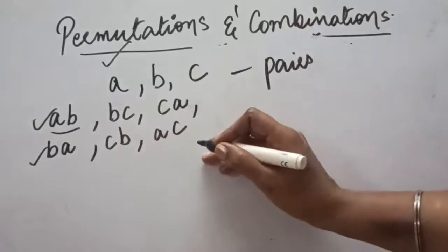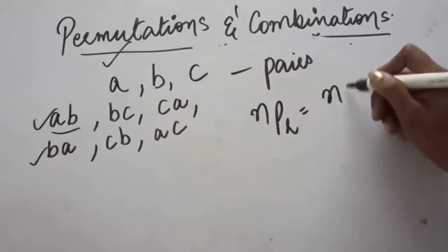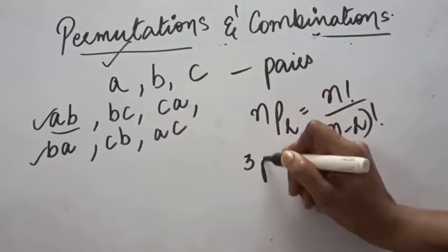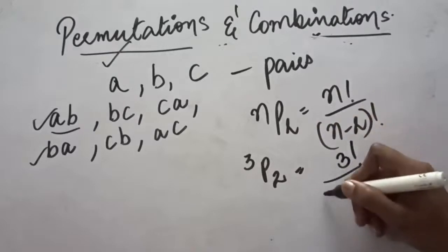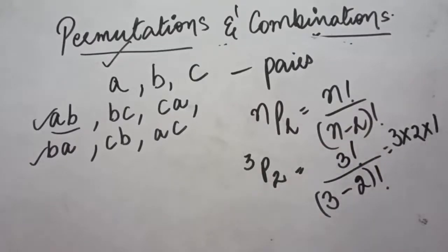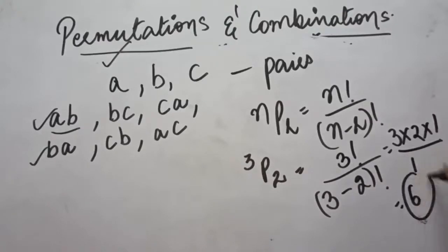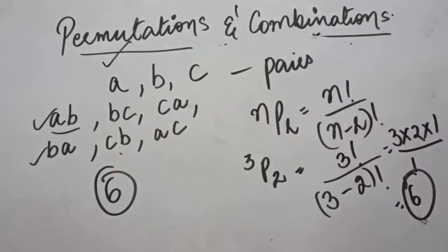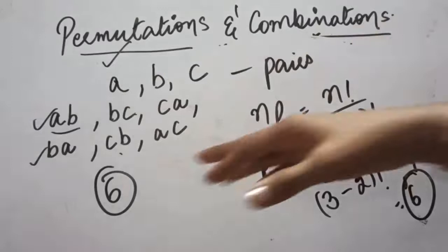Solving this with the permutation formula NPR = N factorial divided by (N minus R) factorial: N is 3 (three letters), R is 2 (pairs of two). So it becomes 3 factorial divided by (3 minus 2) factorial = 3×2×1 divided by 1 factorial = 6 divided by 1 = 6. Counting the pairs gives 6, and the formula also gives 6. This formula is especially helpful when there are many figures, such as 52.